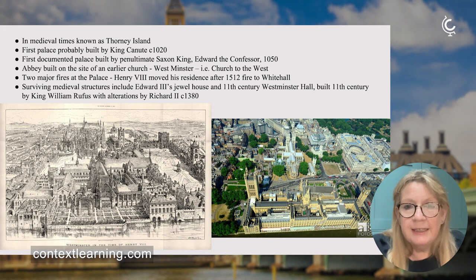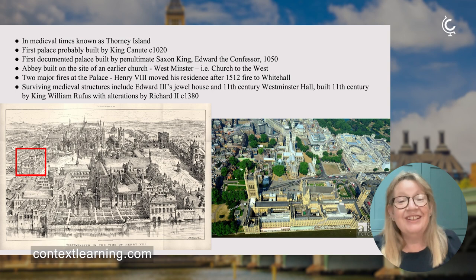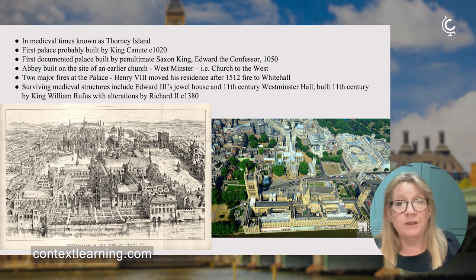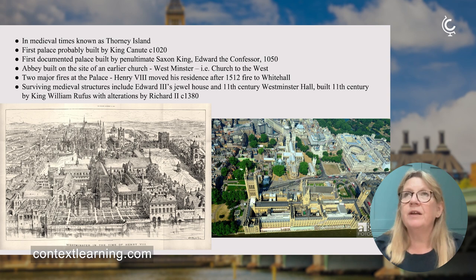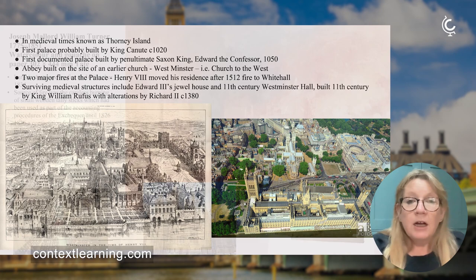There was a major fire in 1512, and what survives from before that is the Jewel Tower, where Edward III and successive kings kept their plate and magnificent wardrobe. Also surviving is Westminster Hall — visible in old engravings — built in the 11th century but substantially altered by Richard II in 1380.